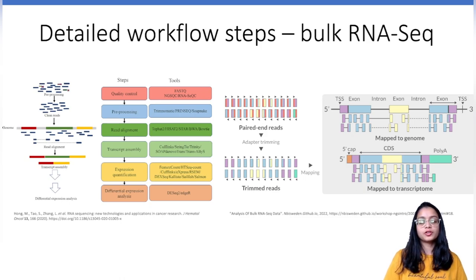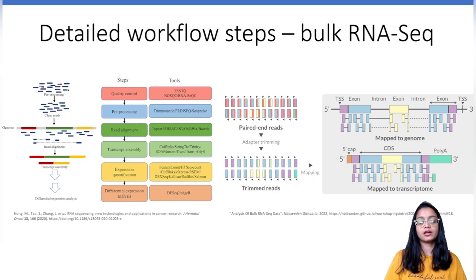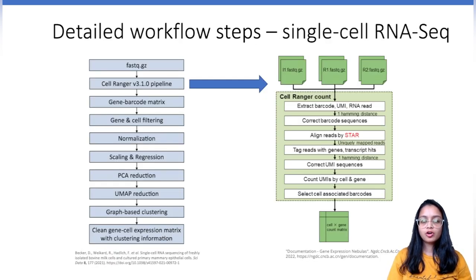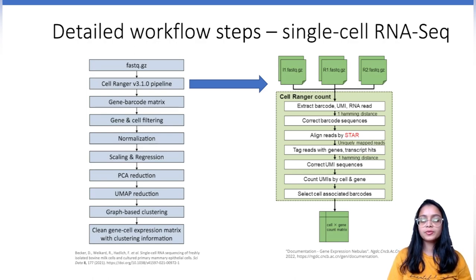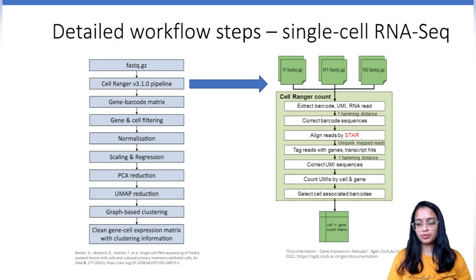These gene-level and transcript-level quantifications can be stored in a count matrix, which can be used for further downstream analysis. One of the commonly performed analyses is differential expression analysis to find differentially expressed genes or transcripts. Now coming to the computational workflow steps for single-cell data — specifically Chromium single-cell data from 10x Genomics — reads from the single cell are present in FASTQ files which are inputted to a Cell Ranger pipeline. The choice of Cell Ranger pipeline varies with the library type.